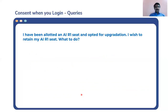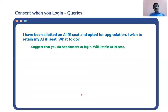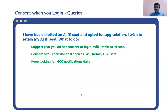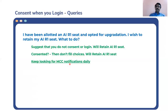For candidates who were allotted an AIR1 seat and opted for upgradation but wish to retain their AIR1 seat: nothing needs to be done. We suggest you don't consent or log in — you will still retain your AIR1 seat. Let's say you consented and said yes by mistake. Nothing will happen if you don't fill choices. Just don't fill choices even if you said yes for consent — your AIR1 seat will be retained. As per the information brochure, nothing is required to retain a joined and continuing AIR1 seat. Do not worry about the consent — whether you gave yes doesn't matter. Just don't fill choices. If you did not do anything, you don't need to log in at all; you'll still retain your AIR1 seat.